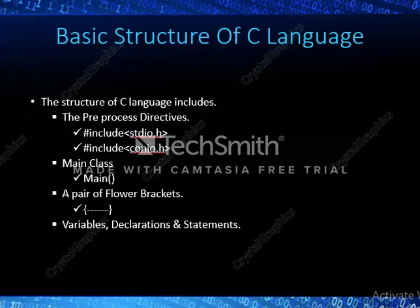Coming to the basic structure of C language, it contains four core parts: preprocessor directives, main class, a pair of flower brackets, variable declarations, and statements. The preprocessor directives contain #include stdio.h and #include conio.h, which include all the inbuilt keywords used in C language.